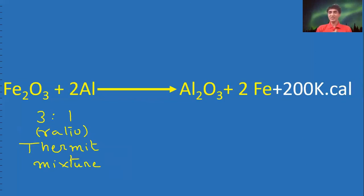What happens? Ferric oxide reacts with aluminum giving aluminum oxide and iron. Large amount of heat is released.